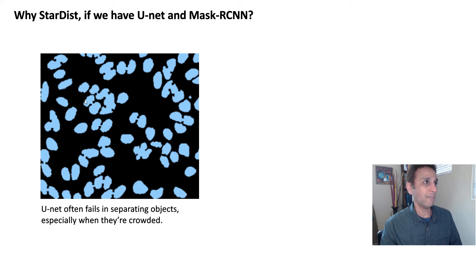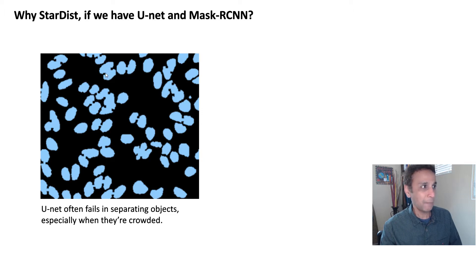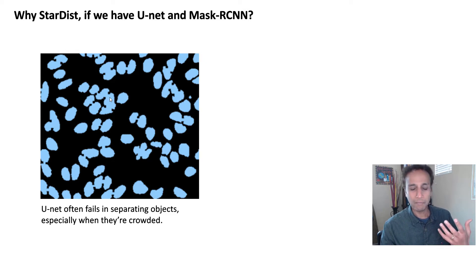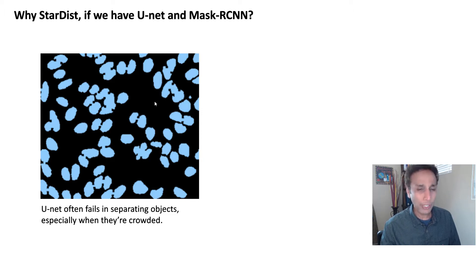Why do we need StarDist if we have amazing tools like UNet? UNet does a great job on many types of examples, but if the problem is more challenging — like objects that are connected but need to be separated — you can follow certain tricks, like adding a border around each object and treating the boundary as another class. I covered this in a past video. But those tricks still fail at separating objects in a very consistent way, especially in crowded scenarios.